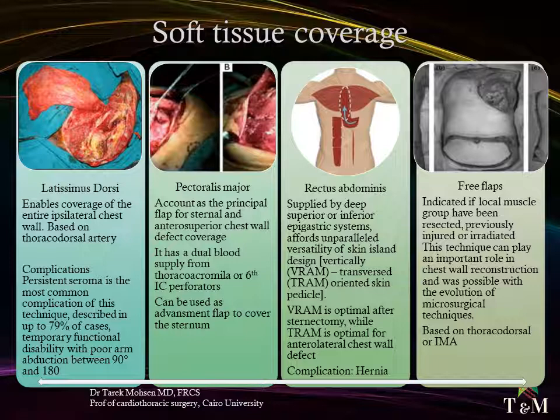The pectoralis major is considered the principal flap for sternal and anterior superior chest wall defect coverage. Its blood supply is duplex: the dominant comes from the thoracoacromial pedicle, and the other from the 6th intercostal perforating branches arising from the mammary artery. If bilateral pectoralis flaps are mobilized to cover the sternum and a future sternal resection is required, the flaps can usually be preserved and reapplied to the sternum.